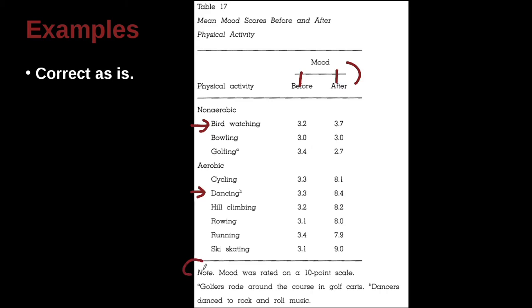We've got our note here, and it's italicized with a period at the end. We have a little A here, and a little B here, superscripts. And A is up in here, and B is up in here. And so we can see what does B mean? B means dancers dance to rock and roll music. What does A mean? Golfers rode around the course in golf carts. So we don't want to put that information inside the table because it would make the table too big. So that's looking good. That looks like a good example.